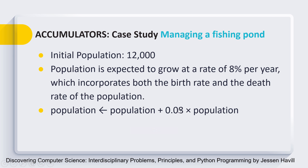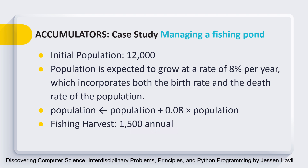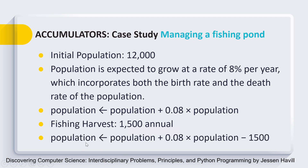The new population will be the current population plus 8% of the existing population — this represents the growth per year. But we also need to account for harvesting of 1,500 annually, so we subtract that number. The final formula is: new population = current population + (0.08 × current population) − 1,500. This gives us the net population at the end of each year.